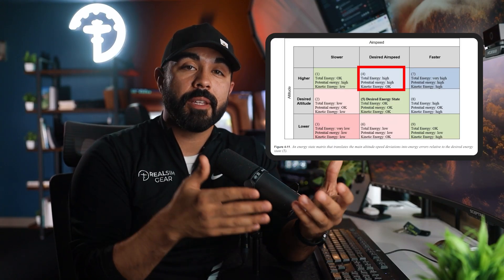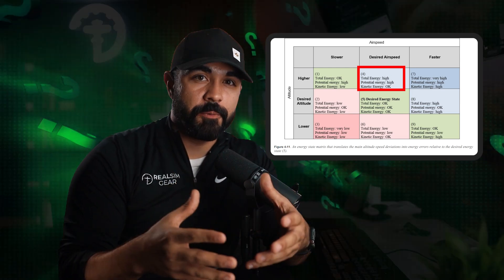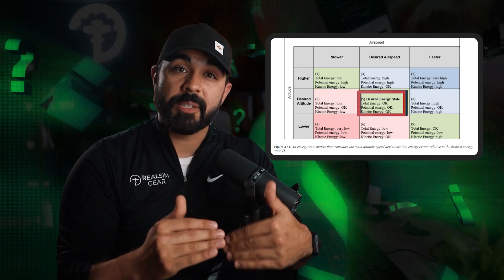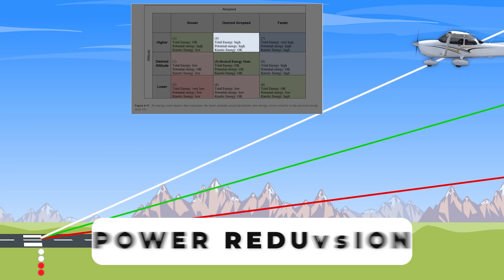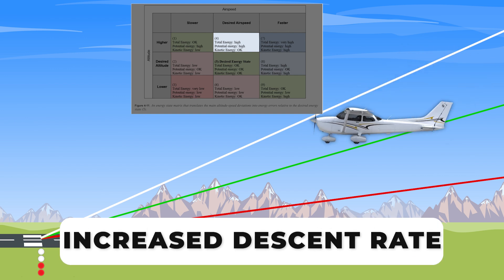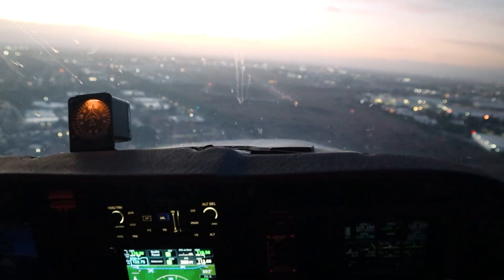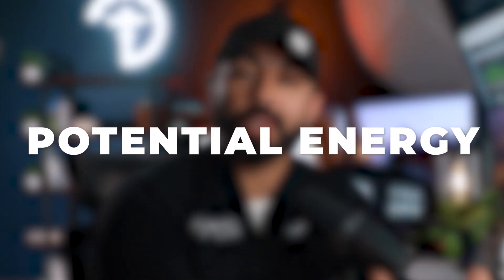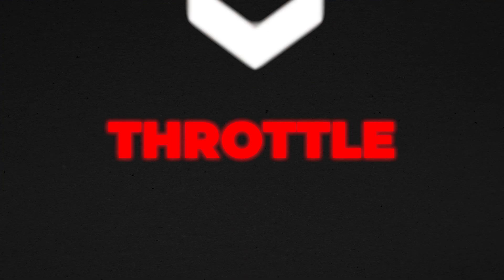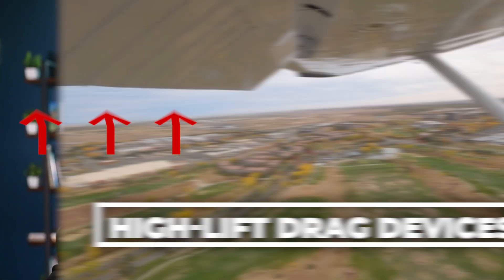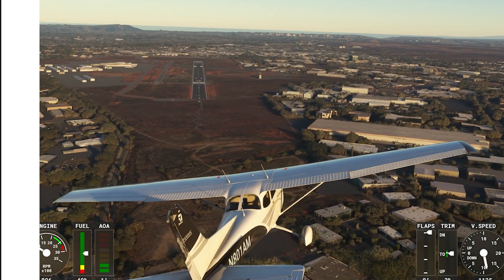Let's look at one last box in the matrix — where kinetic energy is where it needs to be but there is too much potential energy. Our options for reducing total energy into the center green space: just going off of pitch for airspeed and power for altitude, power would be the go-to here. Reducing the power would increase our descent rate, thereby reducing our potential energy into the green. And if we maintained our speed by letting the nose change normally with the throttle reduction, we should eventually have the desired amount of both kinetic and potential energy. But there's always a third option — the total energy is the sum of thrust and drag, so another option is to increase drag using high-lift drag devices such as flaps, or putting the airplane into a forward slip.